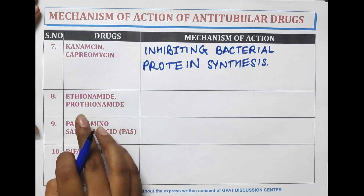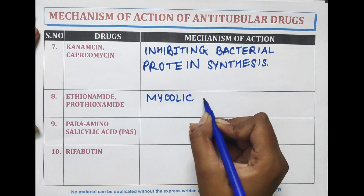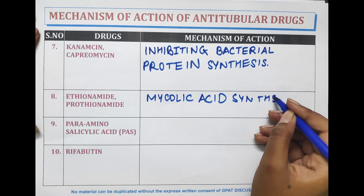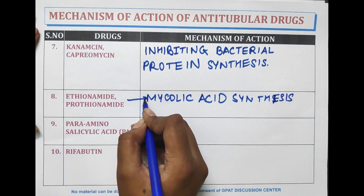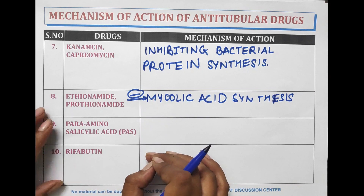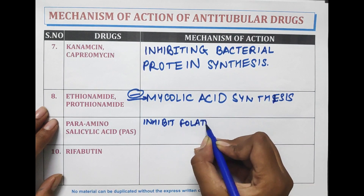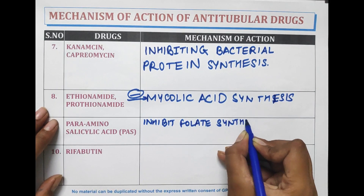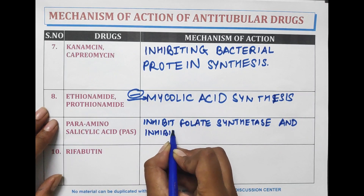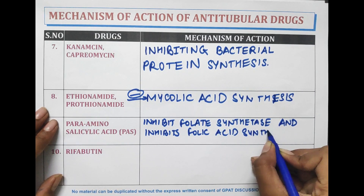Next are ethionamide and prothionamide. These drugs inhibit mycolic acid synthesis in the bacteria. Para-aminosalicylic acid, abbreviated as PAS, inhibits folate synthetase in the bacteria.